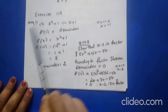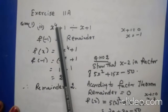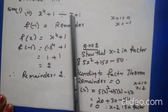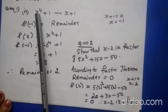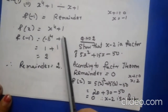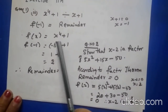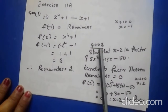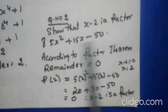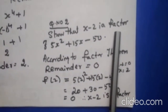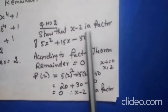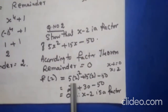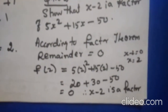Exercise question 1: Find the remainder when x⁴ + 1 is divided by x + 1 using the Remainder Theorem. x + 1 = 0, x = -1. f(-1) = (-1)⁴ + 1 = 1 + 1 = 2. The remainder is 2. Question 2: Show that x - 2 is a factor of the given polynomial. Since it is a factor, the remainder must be 0. Substitute x = 2: f(2) = 5(4) + 15(2) - 50 = 0. Therefore x - 2 is a factor.